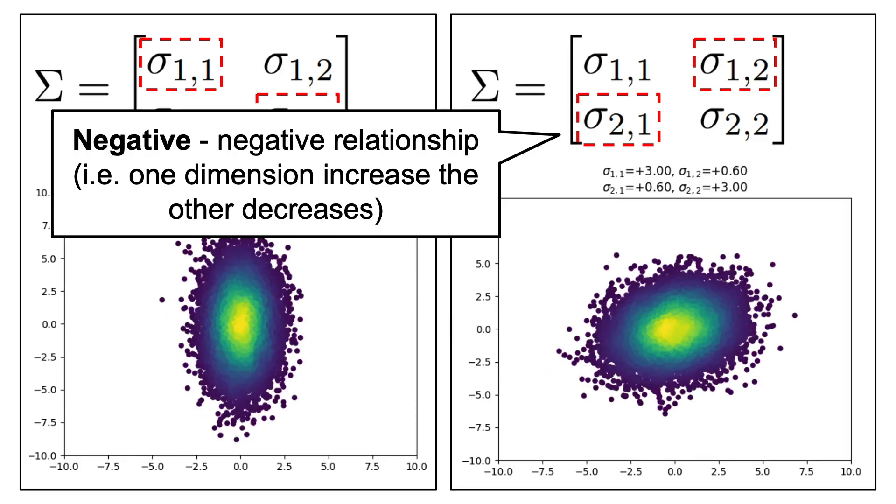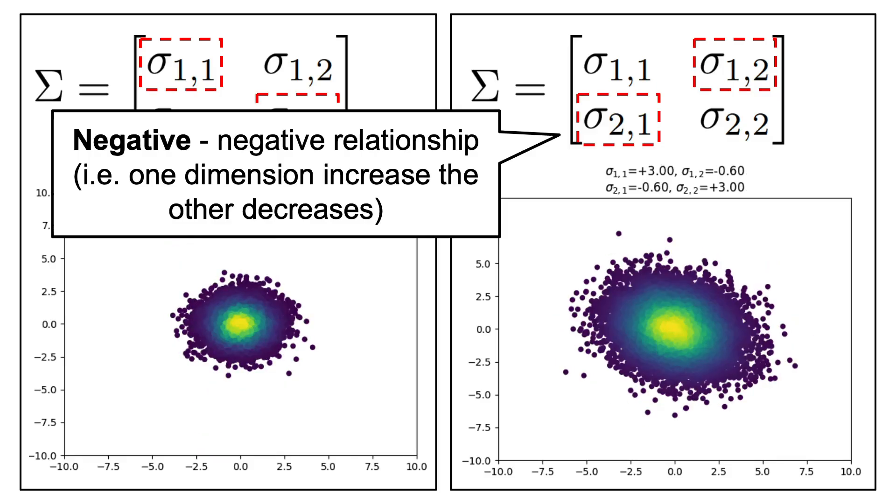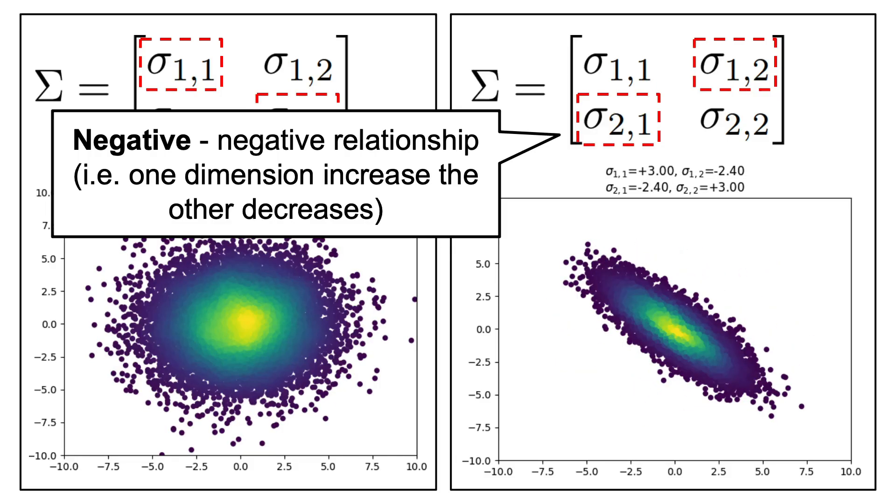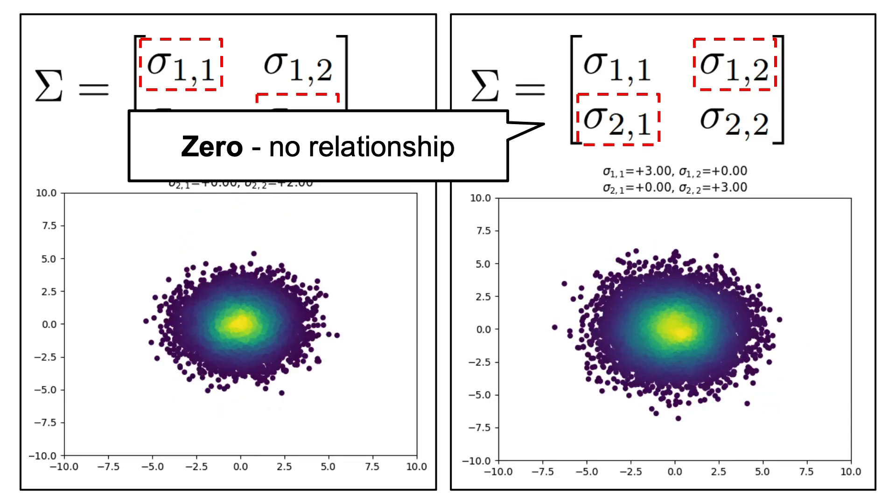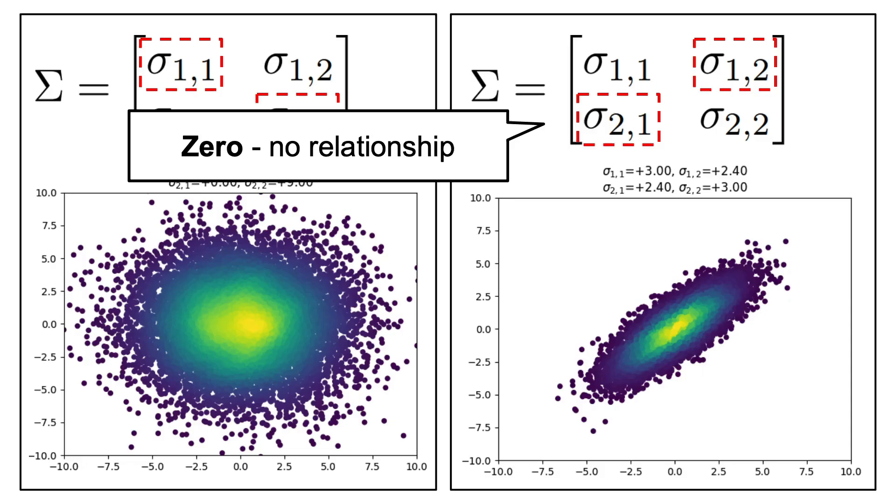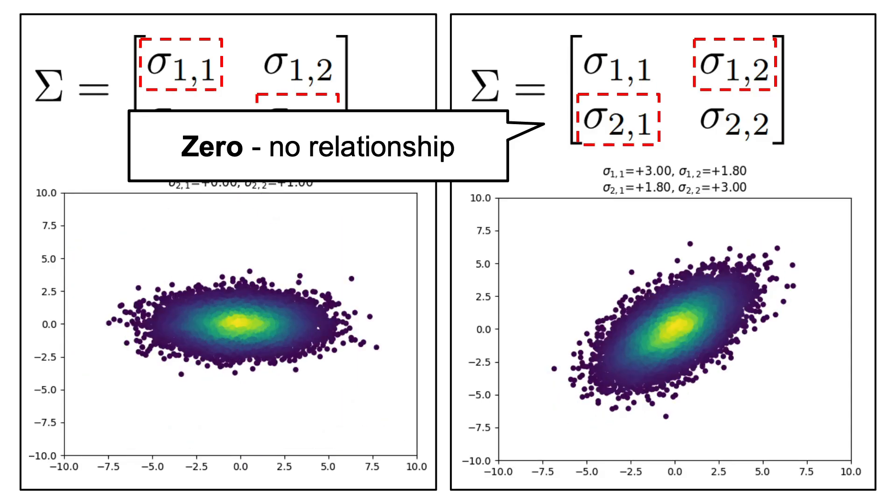If the covariance is negative, it means that as one variable increases, the other tends to decrease. A covariance of zero means that the variables are uncorrelated, implying that the changes in one variable don't predict the changes in the other.